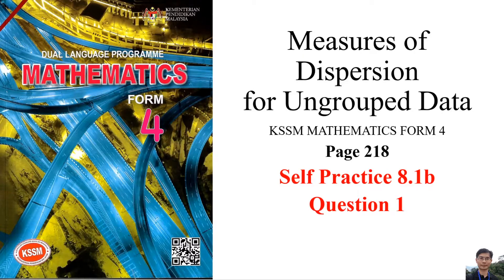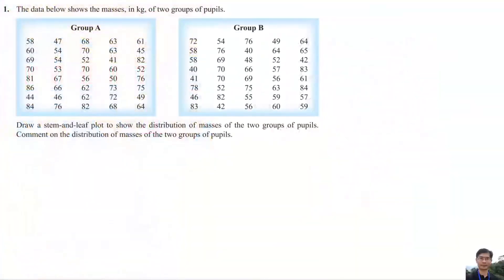Measure of dispersion — full arm group data. QSSM Mathematics, Form 4, page 215, self-practice 8.1b, question 1. The data below shows the masses in kilograms of two groups of pupils. Draw a stem and leaf plot to show the distribution of masses of the two groups of pupils, and comment on the distribution of masses of the two groups.